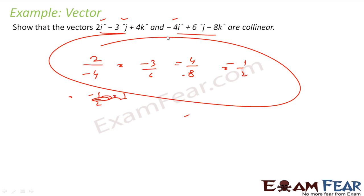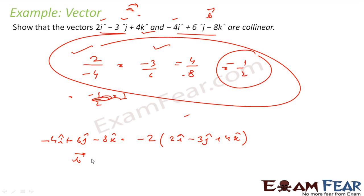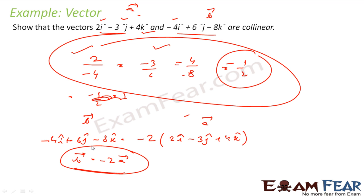Because the ratio of the i component, 2 by minus 4, is equal to the ratio of j, that is minus 3 by 6, is equal to the ratio of k, 4 by minus 8, and all are equal to minus 1 by 2. Thus, I can say that these vectors are collinear. Or by observation, you can say that if this vector is A and this vector is B, then B vector is equal to minus 2 into A vector. With this process also, I can say that both are collinear.